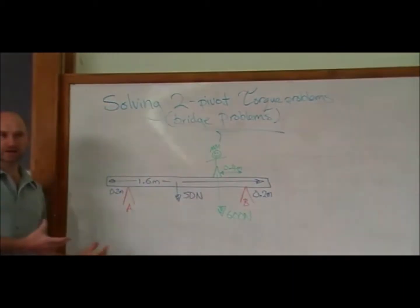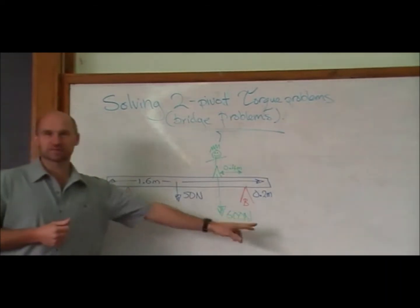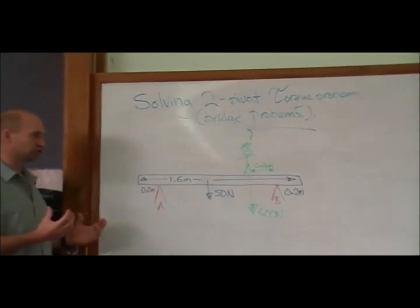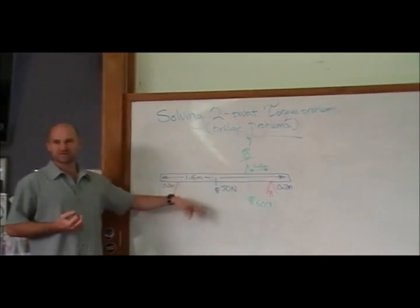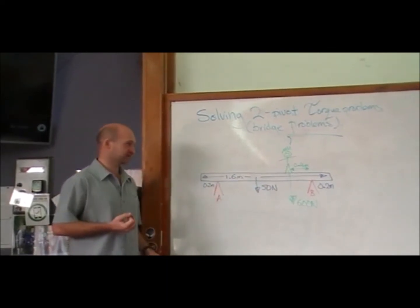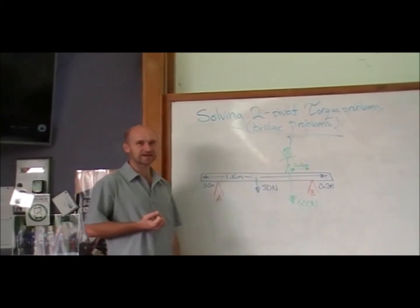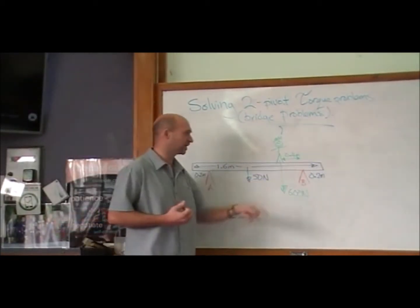Okay, so this is the current problem that you guys are expecting to run up against, which is the two-pivot bridge problem. So we've got a plank, 1.6 meters long, 50 newtons, and we've got a physicist, 600 newtons, bravely standing 0.4 meters from the end of the plank, from pivot point B.